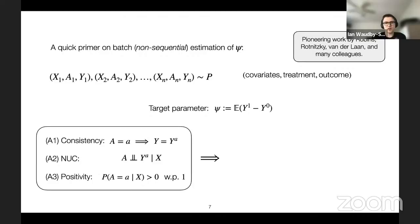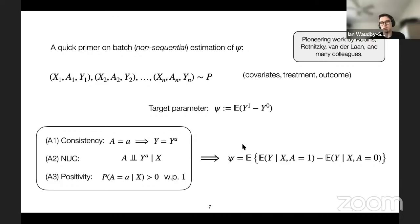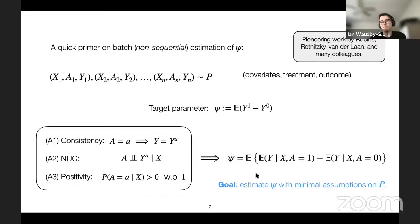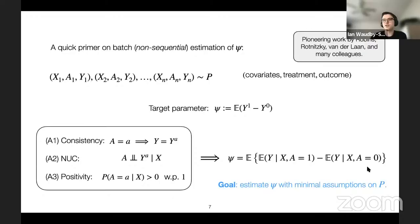Under these three causal identification assumptions — consistency, no unmeasured confounding, and positivity — this is a well-known result: the target parameter can be identified as a statistical quantity, specifically a difference of expectations that is just a functional of the distribution p. The goal is to estimate this with minimal assumptions on p and with as high precision as possible. Even if these assumptions don't hold, this can still be an interesting statistical quantity — it just won't have a causal interpretation.